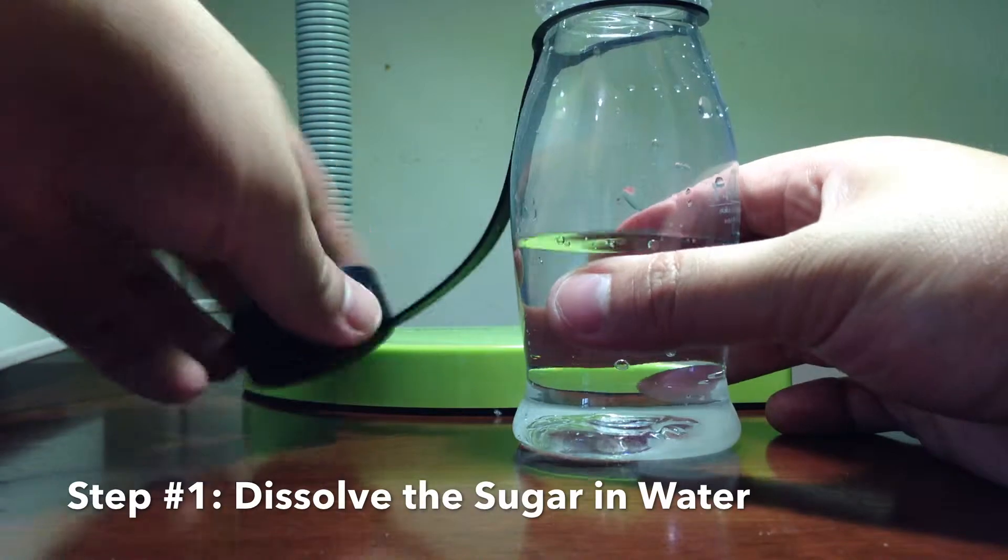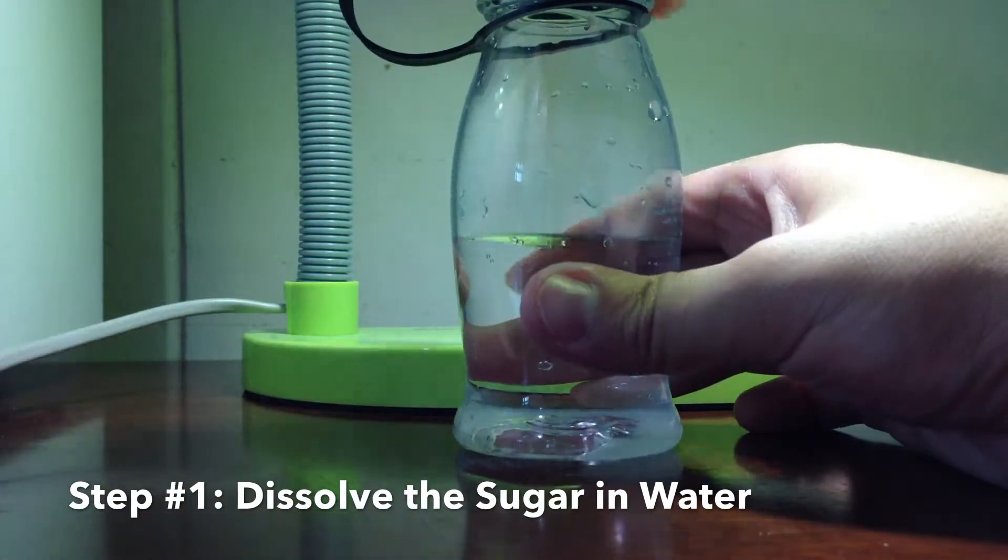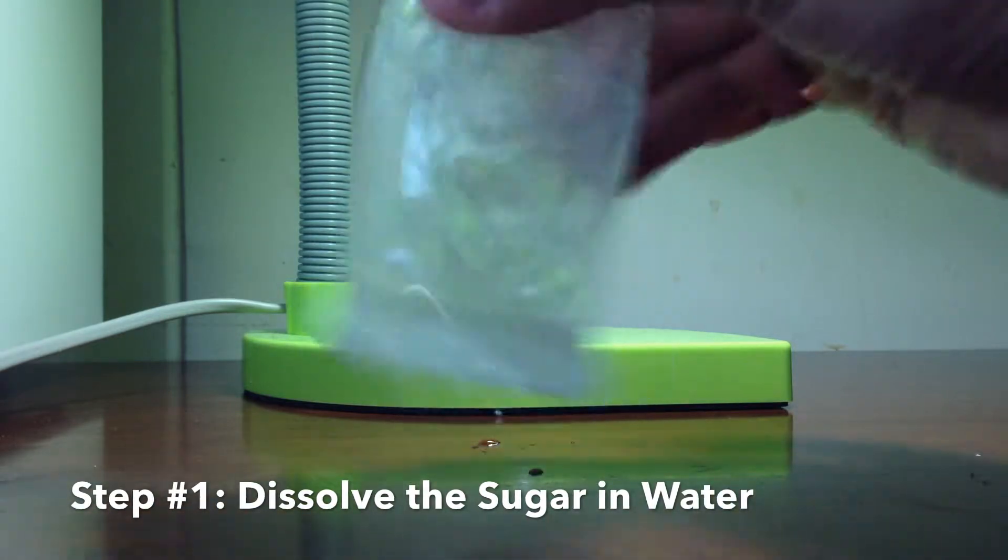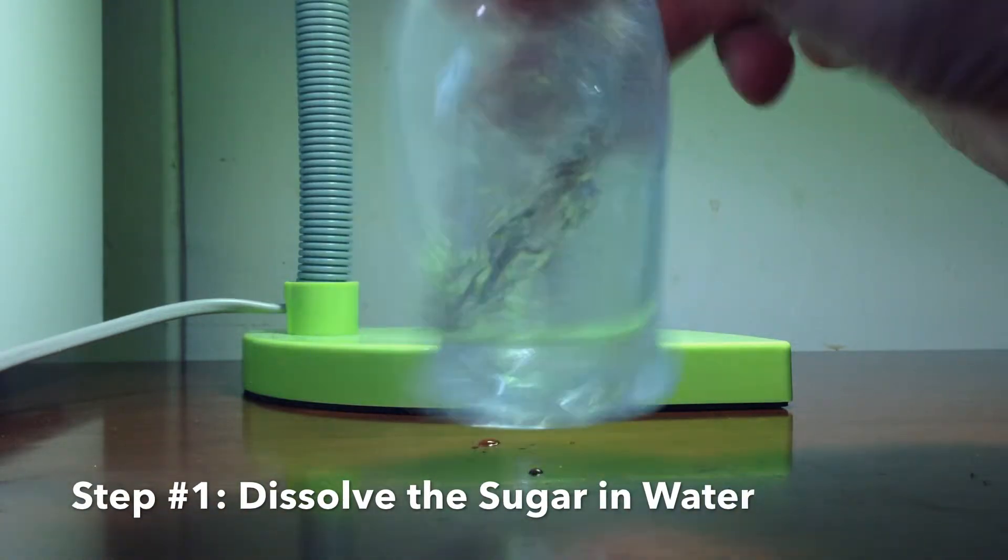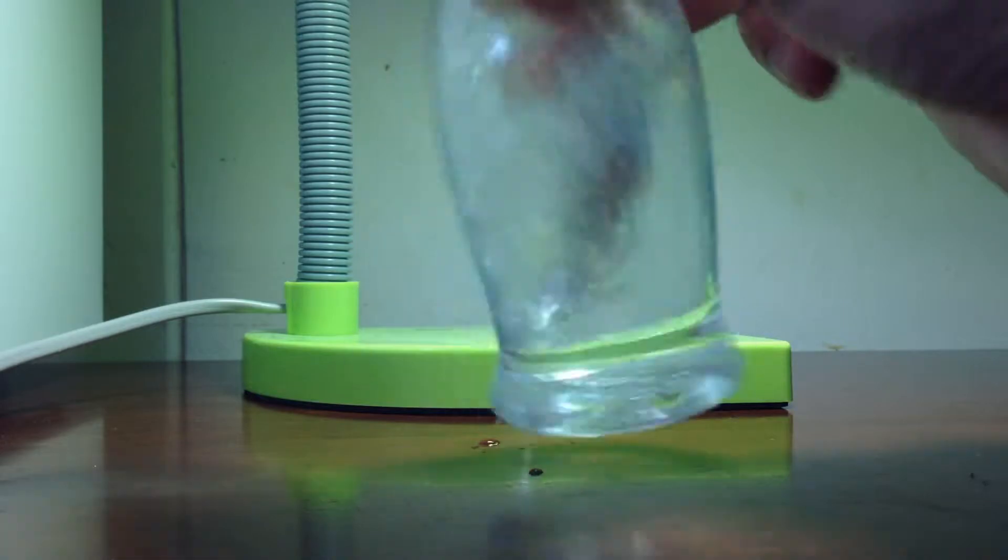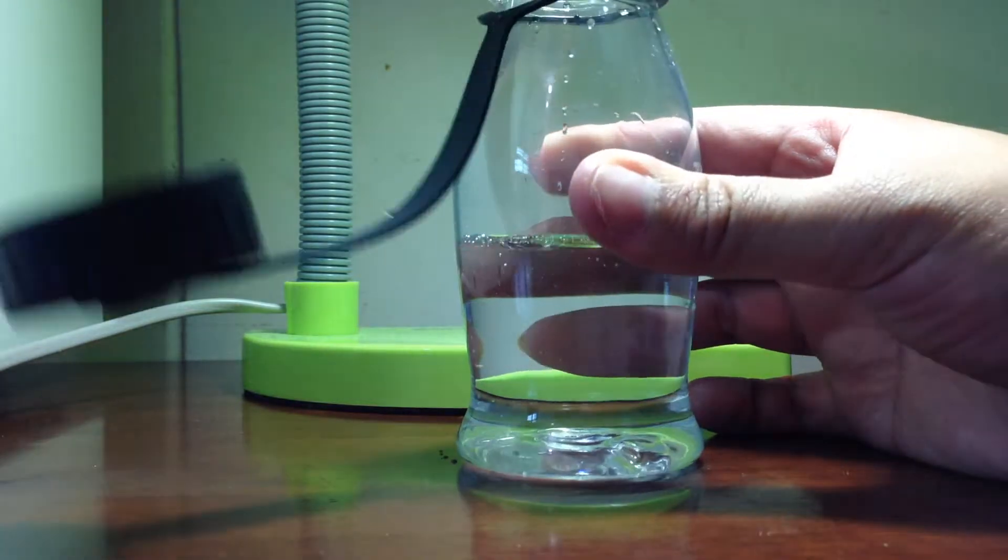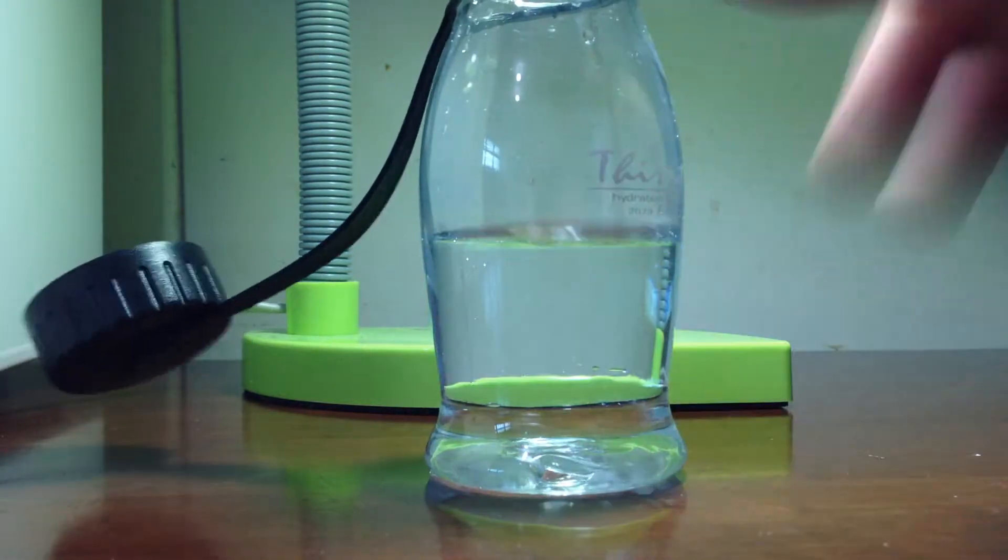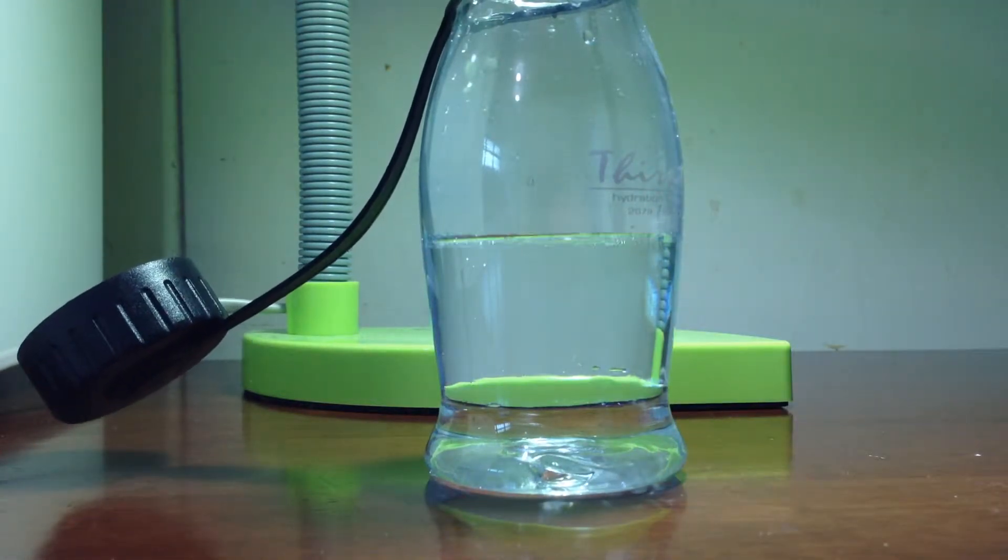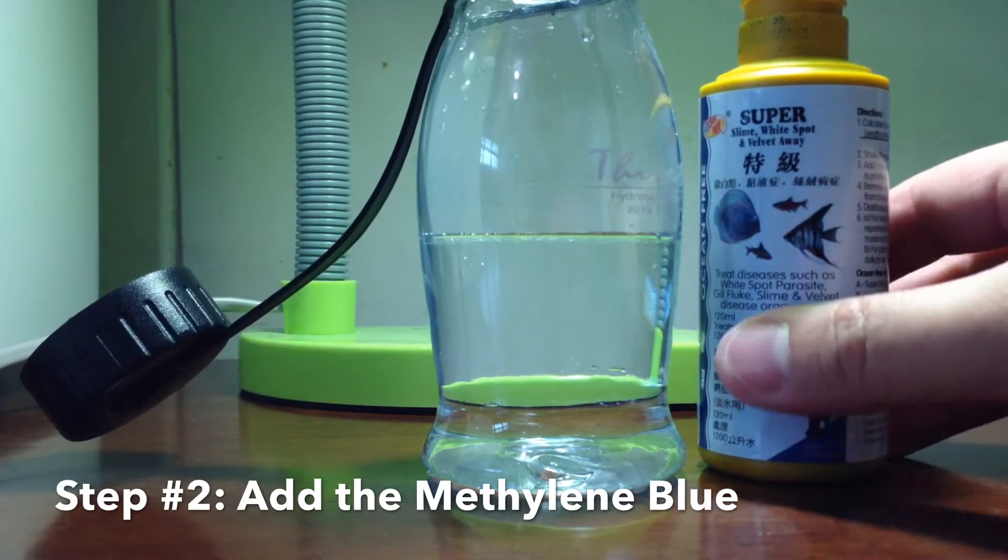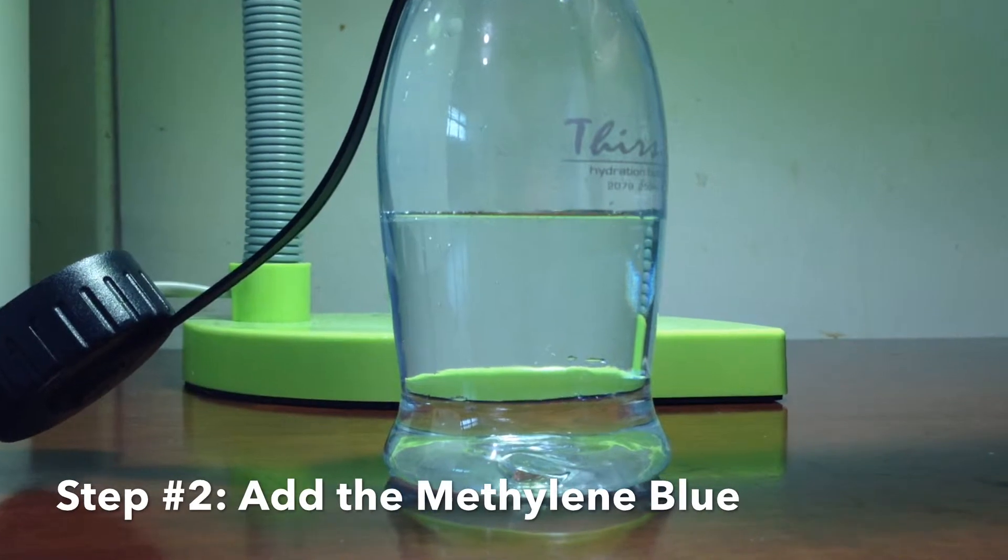Cap the bottle and give it a good swirl to ensure all the sugar is dissolved. Add about 2 to 3 drops of methylene blue.